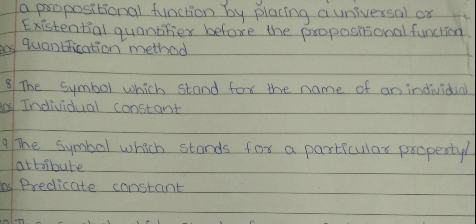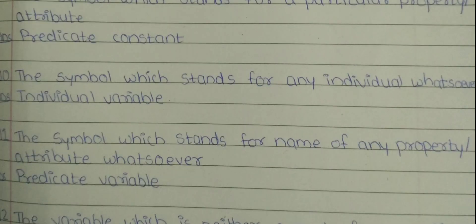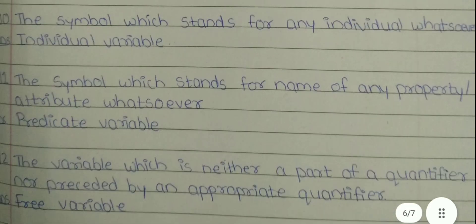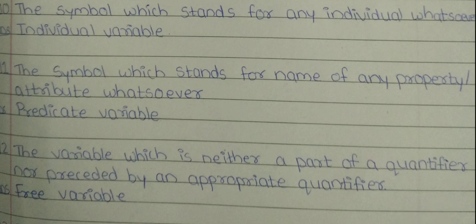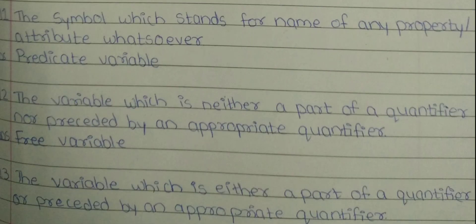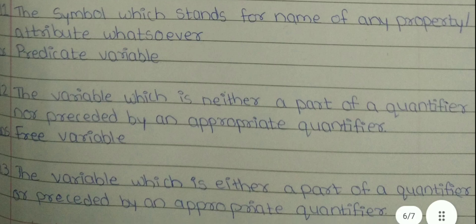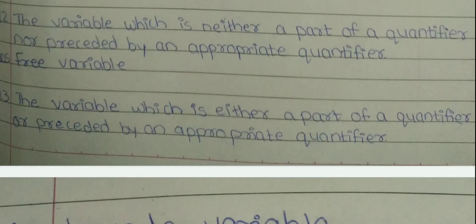Ninth, the symbol which stands for a particular property or attribute — the answer is predicate constant. Tenth, the symbol which stands for any individual whatsoever — the answer is individual variable. Eleventh, the symbol which stands for the name of any property or attribute whatsoever — the answer is predicate variable. Twelfth, the variable which is neither a part of a quantifier nor presided by an appropriate quantifier — the answer is bound variable. Thirteenth, the variable which is either a part of a quantifier or presided by an appropriate quantifier — the answer is bound variable.